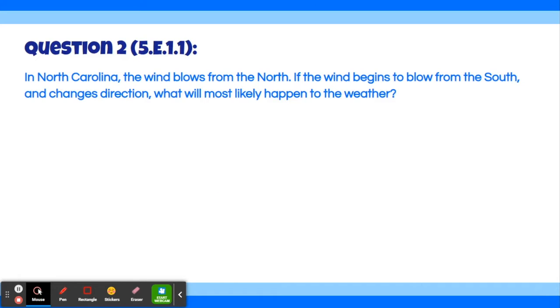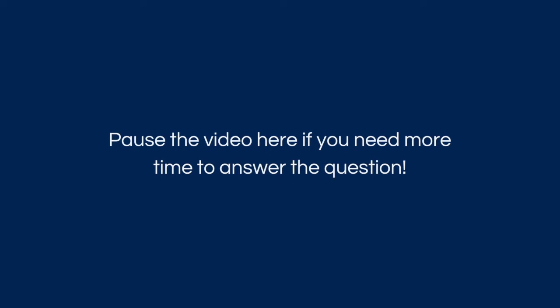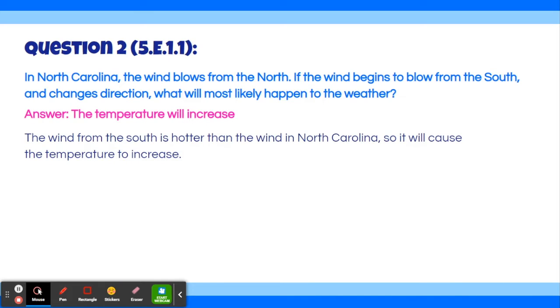Okay, moving on to question number two. In North Carolina, the wind blows from the north. If the wind begins to blow from the south and changes direction, what will most likely happen to the weather? The temperature will increase. The wind from the south is hotter than the wind in North Carolina, so it will cause the temperature to increase.